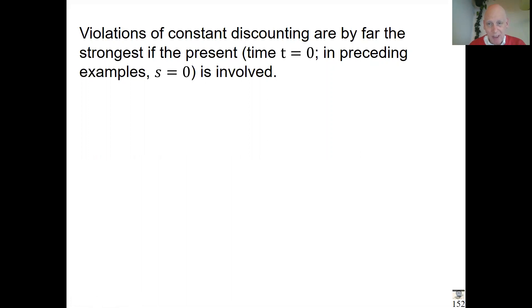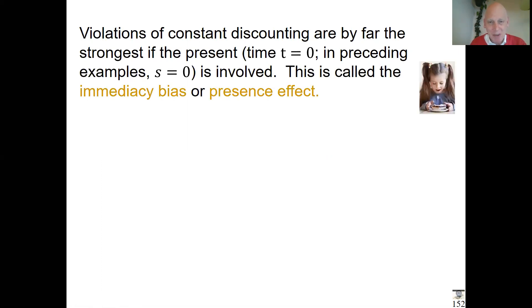Let me repeat: constant discounting is violated most if the present is involved. People have this special liking for the present—you can already feel the taste of the cake, whatever it is. I use the term present effect or immediacy bias for this phenomenon, like the little girl with the cake she can already smell, so she just wants it. That is much over-weighted relative to the rest in the future.